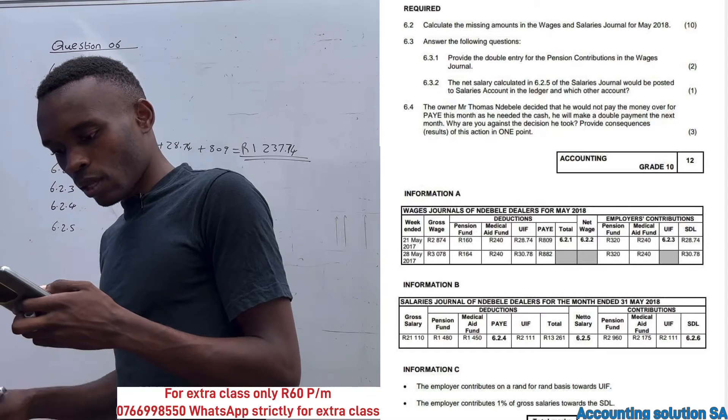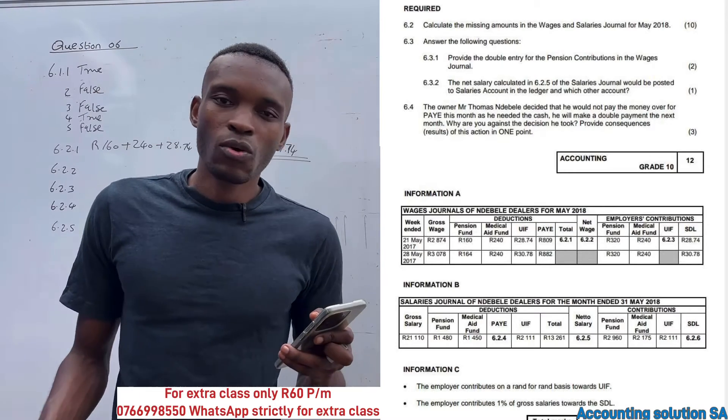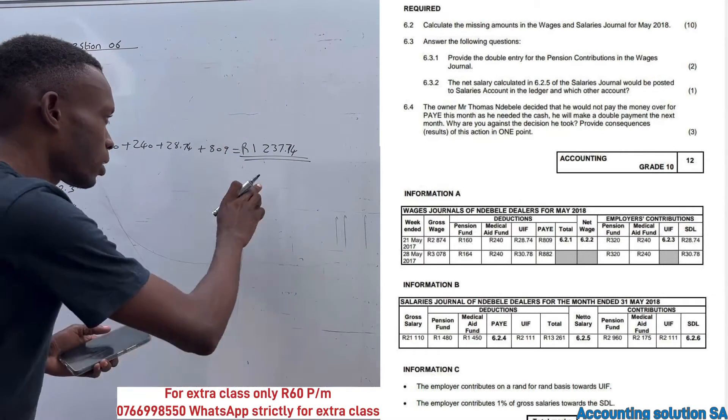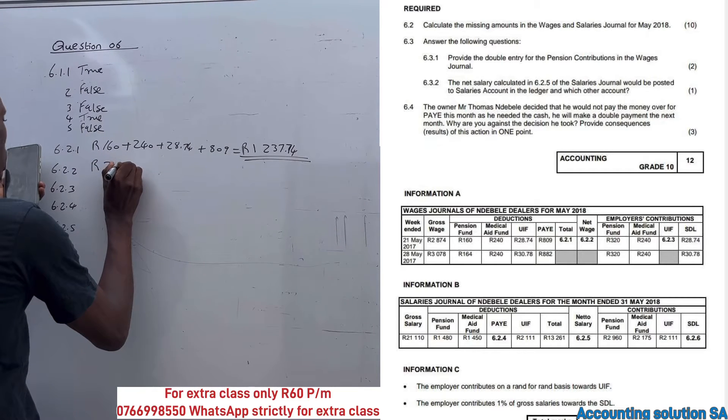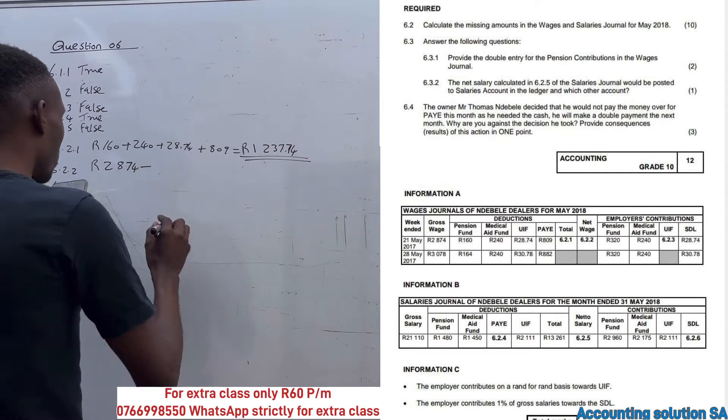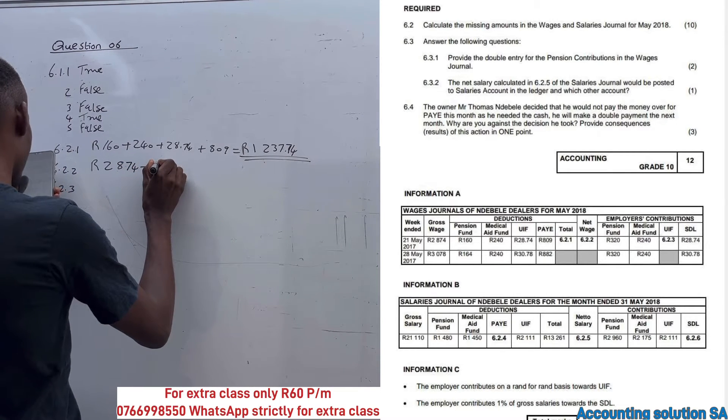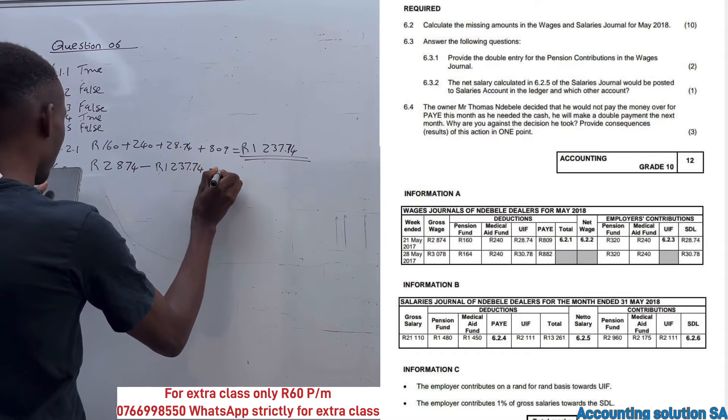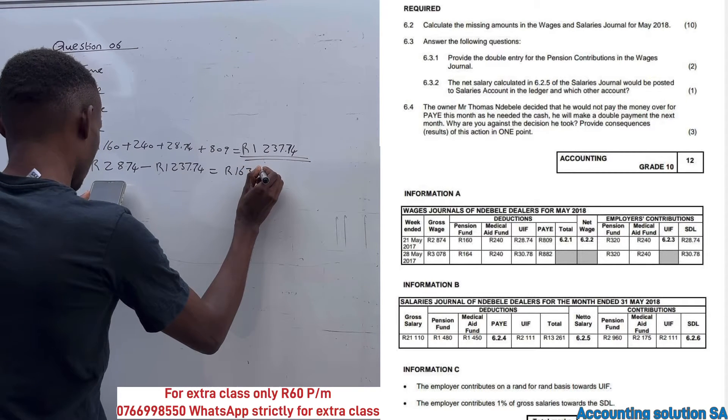Let's move to the next one. They said we have to calculate net wage. When we talk about net salary or net wage, it's gross minus deductions. Deductions is the one that we calculated. Now let's take gross wage which is 2,874, then we subtract total deductions of 1,237.74, then we're gonna get our net of 1,636.26.